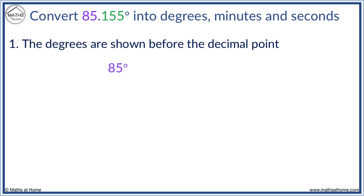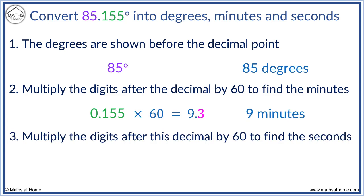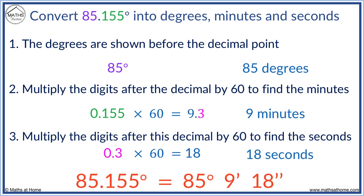Here we have 85 degrees. We multiply 0.155 by 60 to obtain 9.3. So we have 9 minutes. Then, 0.3 times 60 equals 18. So we have 85 degrees, 9 minutes, and 18 seconds.